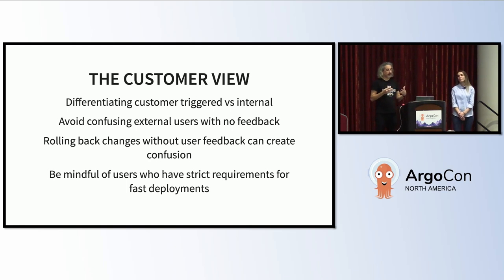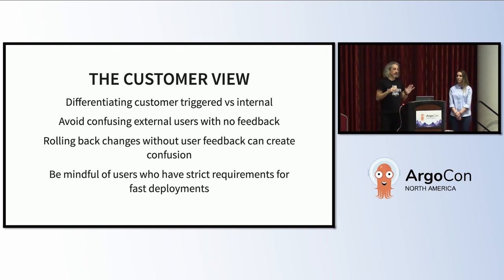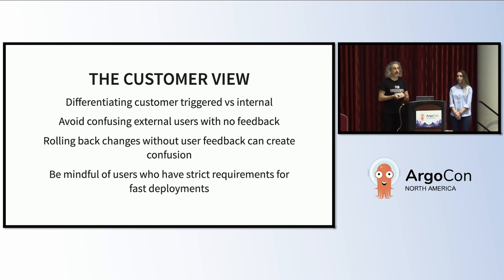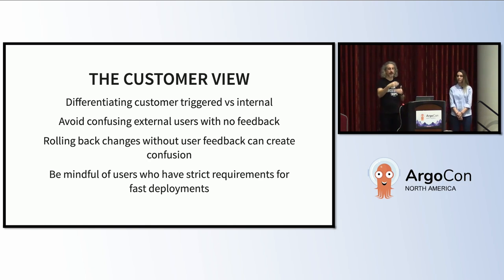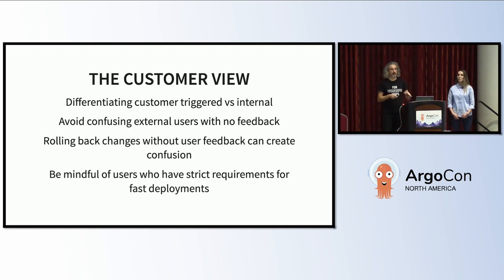From the customer point of view, we are also doing something particular: differentiating whether the rollout is triggered by the customer or by us. Right now we are not providing customer feedback, so we have to stop doing the rollout when a customer makes a change. We do the rollout in just one step for now — we don't want them to have a long rollout because some customers have very strict requirements about how long it takes to push code to production. Also, if we roll back changes without telling them, it's very confusing. So internally we use multiple steps, but for the customer we still use Argo — just in one step.